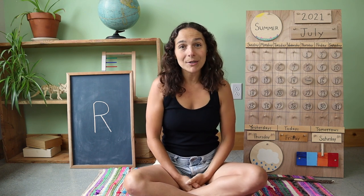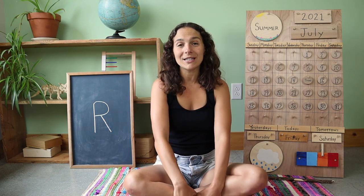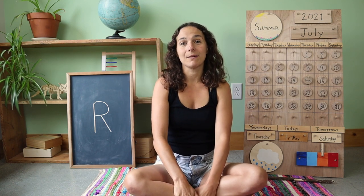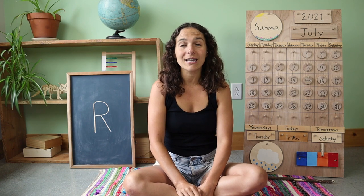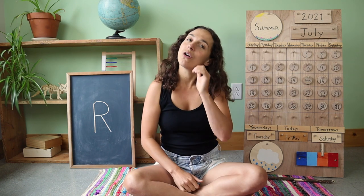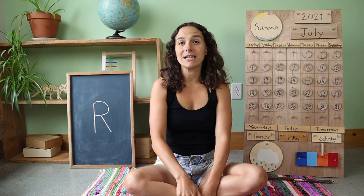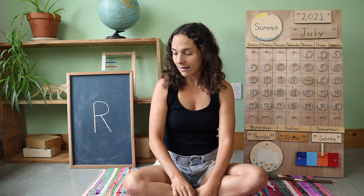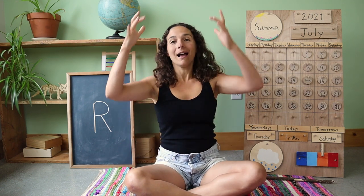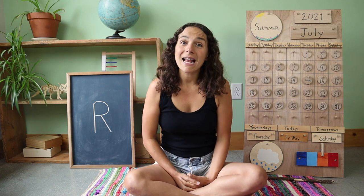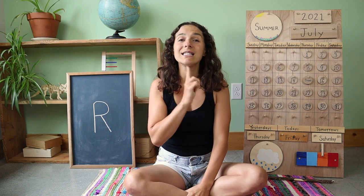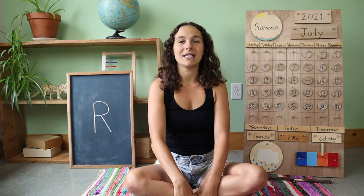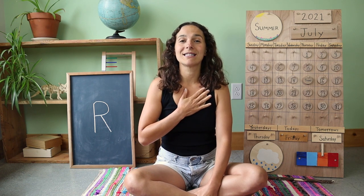Good morning, friends, and welcome to Circle Time. I hope that you're having a wonderful day so far. We have three things that we need to do before we get started. The first thing is to turn on our listening ears. The second thing is to find our thinking hats and put them on top of our head. My thinking hat is right behind me — I'm going to take it and put it on top of my head. Today my thinking hat has a zipper underneath my chin, so I'm going to zip it up.